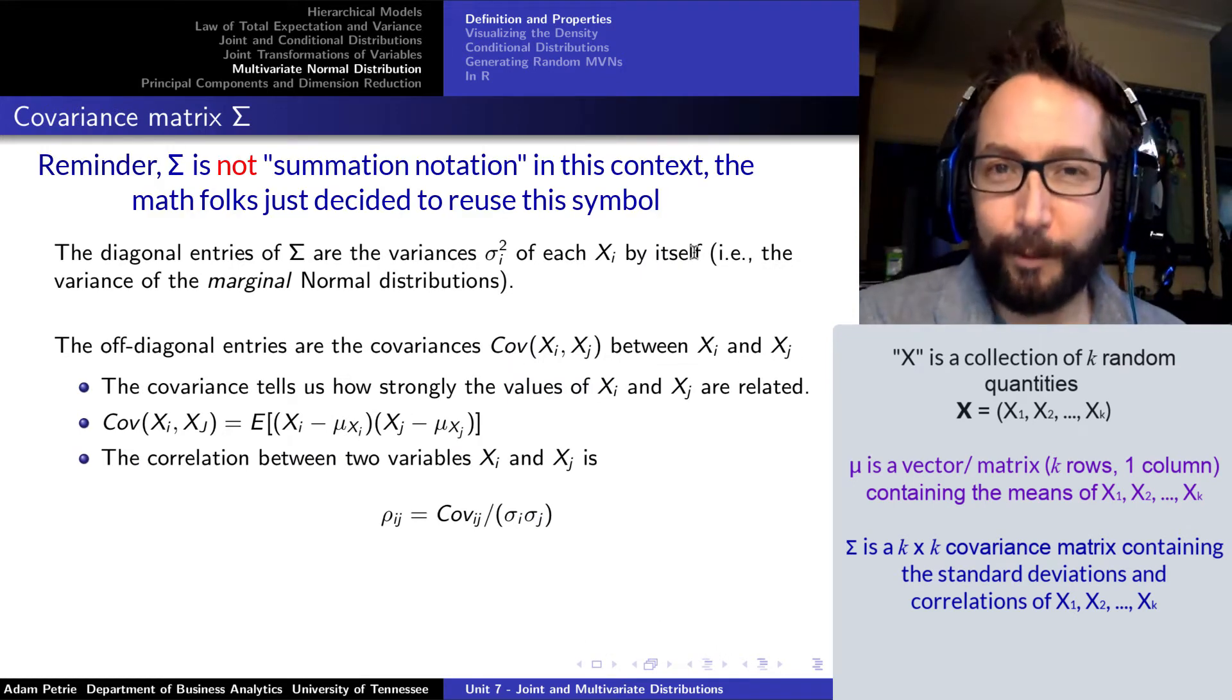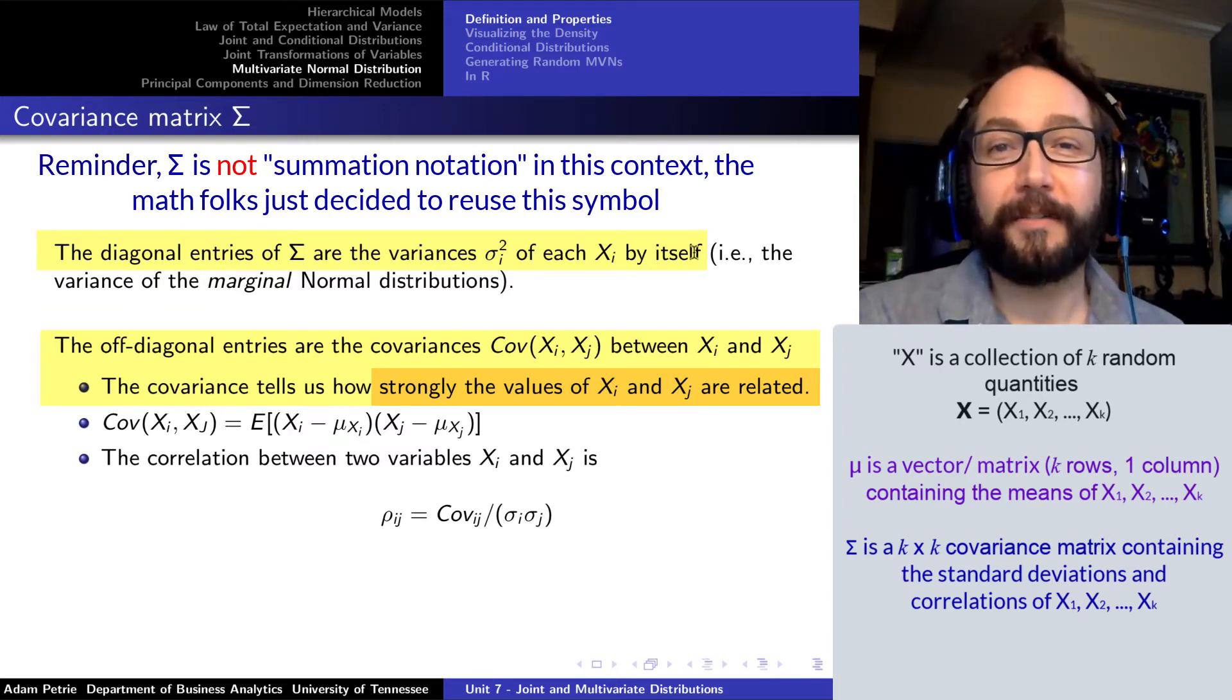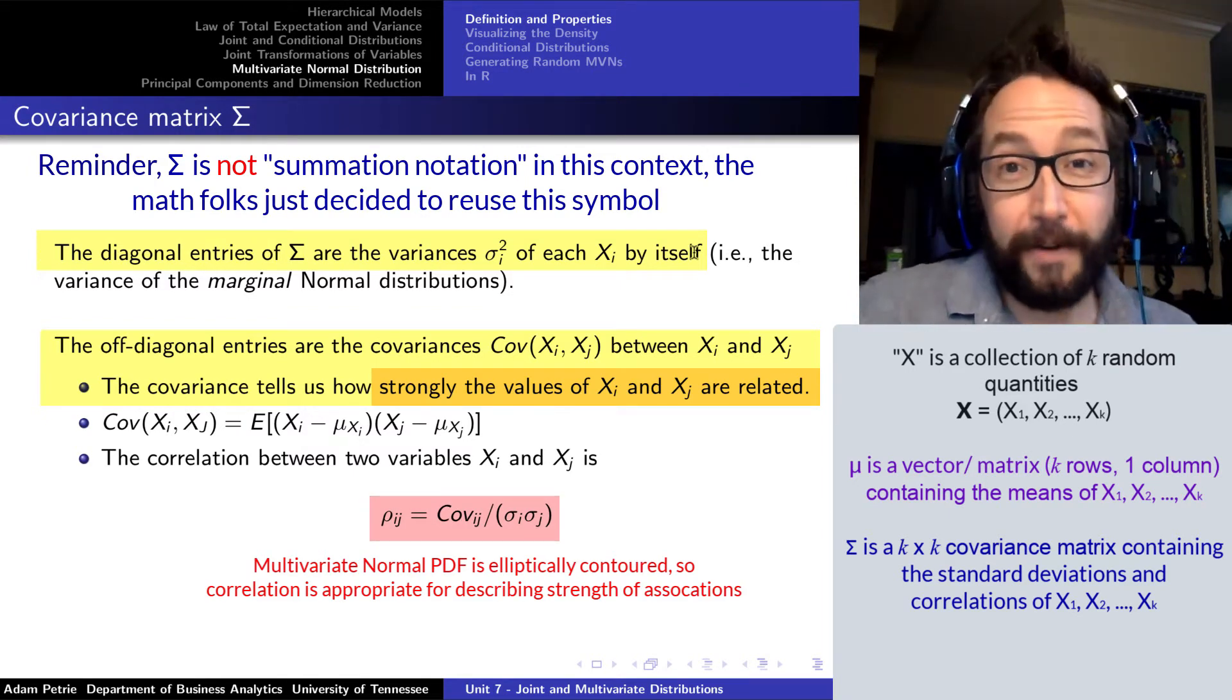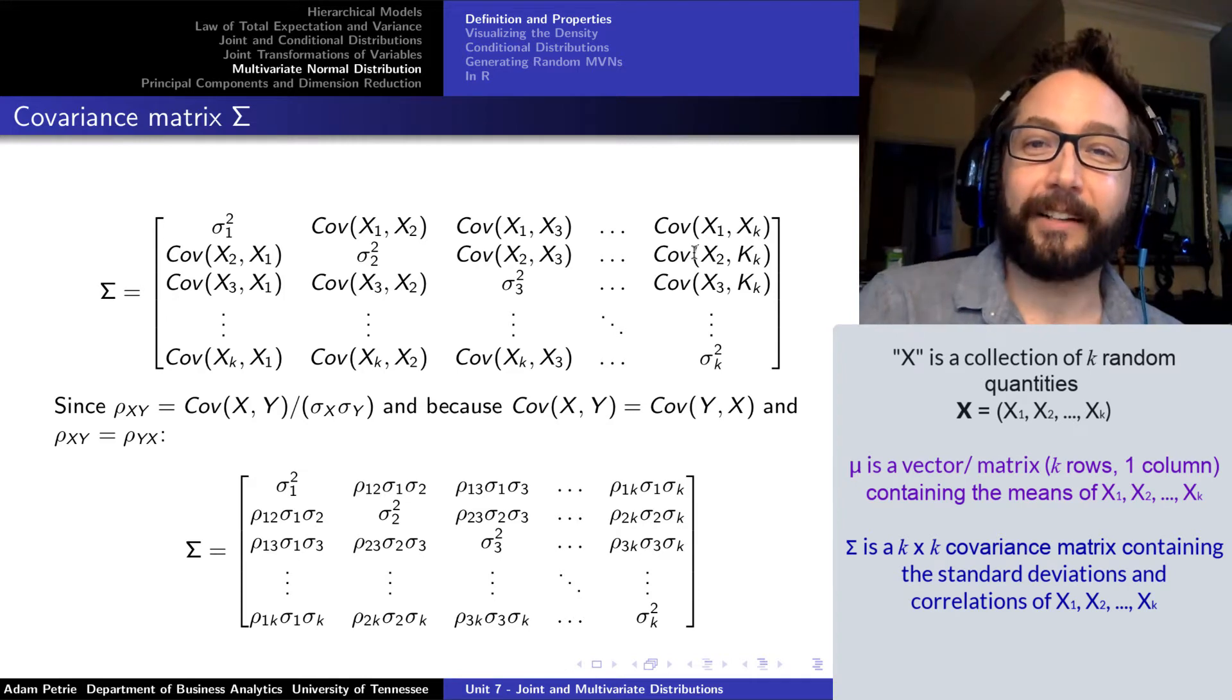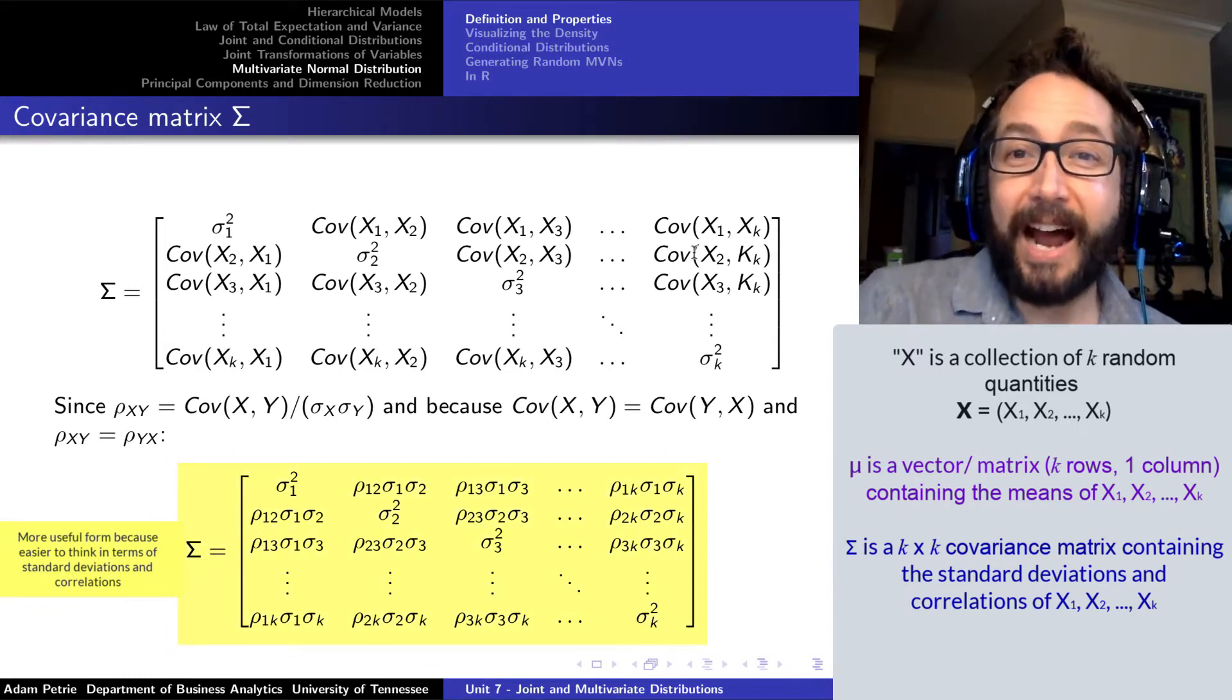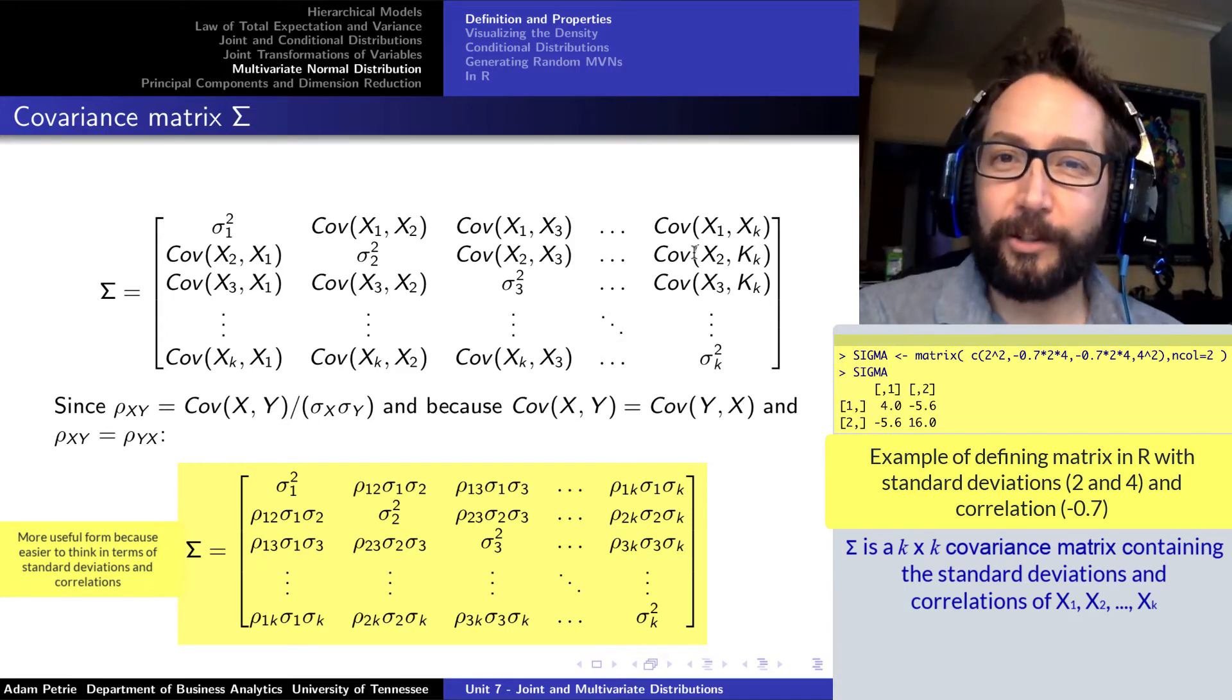Now that covariance matrix, sigma, which we're representing by the capital Greek letter sigma, that's a big old square matrix that talks about not only how strongly related the different random variables are to each other, but also what the variances are of the individual random variables. The correlation between any two random variables i and j would just be the covariance between those two divided by their individual standard deviations. We can write this covariance matrix in one of two forms: we can write the variances across the diagonal and the off-diagonal elements being the covariances. Or my favorite way, I like writing the diagonal elements as the variances, and then actually writing the off-diagonal elements in terms of the correlations, taking the correlation between two random quantities and multiplying it by the two standard deviations involved.